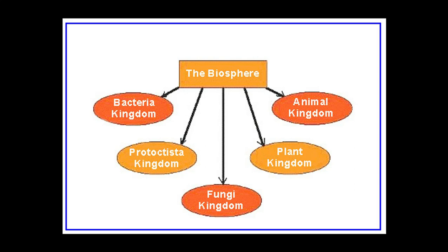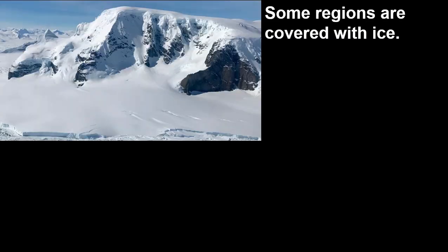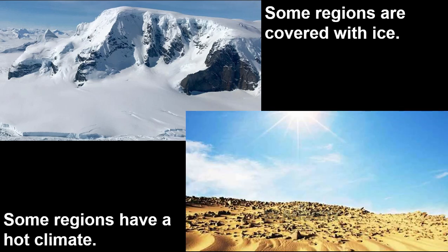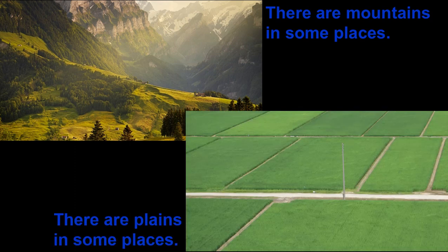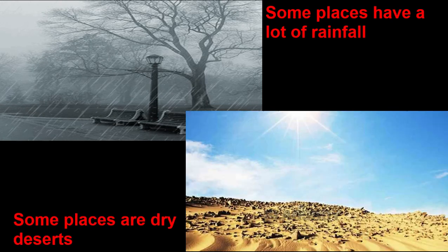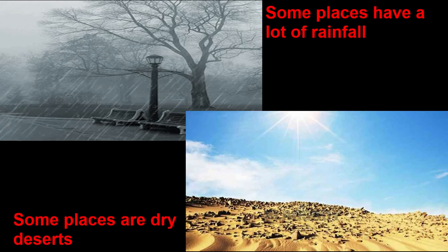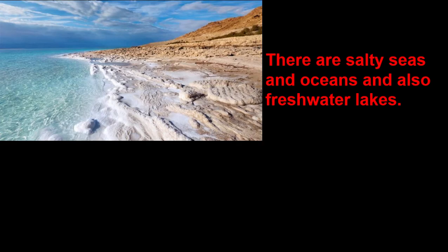There are innumerable kinds of living things on the earth. The various regions of the earth differ in many ways. Some regions are always covered with ice while others have a hot climate. There are mountains in some places and plains in others. Some places have a lot of rainfall while others are dry deserts. There are salty seas and oceans and also freshwater lakes.